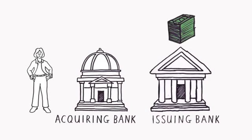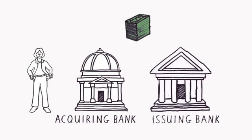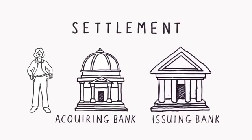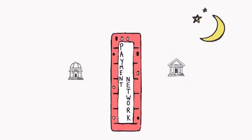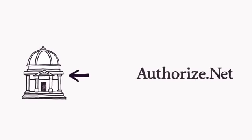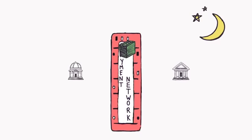The process of transferring money from the buyer's issuing bank to the seller's acquiring bank is called settlement. Settlement occurs every night when banks connect to each other through a payment network. Authorize.net begins the settlement process by collecting the daily transactions and sending them to the bank. The payment network then handles the settlement.